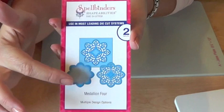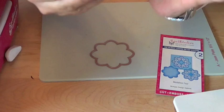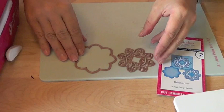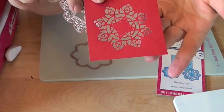All right, next up we have Medallion 4. We have two die templates that give us multiple designs. I'm going to start off by showing you that we can use these die templates in various ways. The first one has very detailed cut edges.